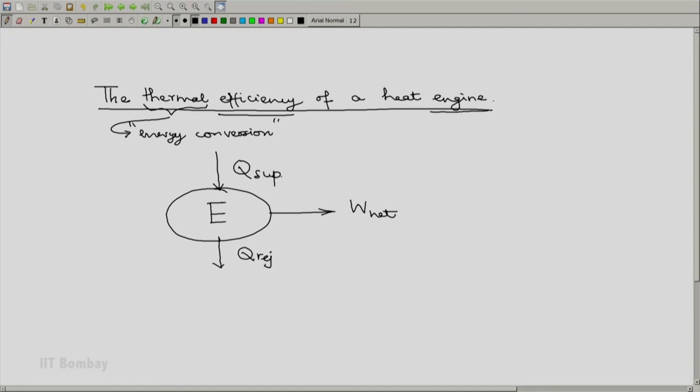This is the heat supplied from some other neighboring systems to our system, the engine. This is the heat rejected by the engine to some other system. Since we have shown this arrow going in, this is the positive heat interaction and this is the negative heat interaction. And since our engine is a cyclic device, the first law would simply become: Q supply minus Q rejected equals W net.